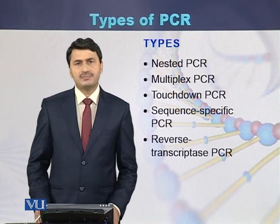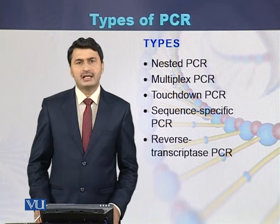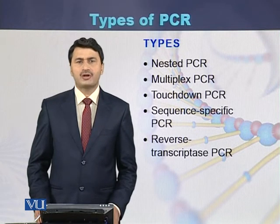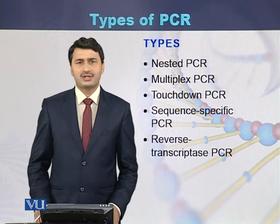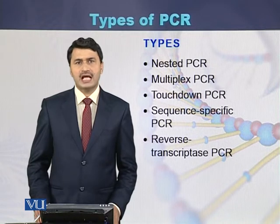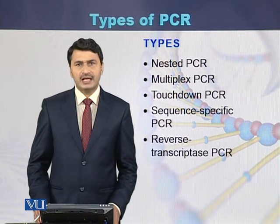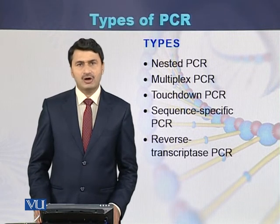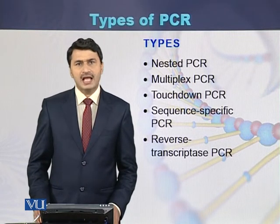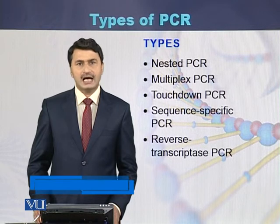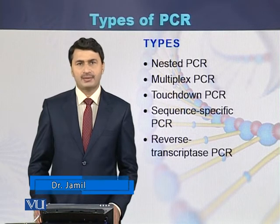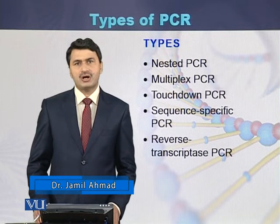Nested PCR is such a PCR in which there are two pairs of primers. The first pair of primers amplifies the larger fragment, while the second pair of primers amplifies the shorter fragment, which is actually within the larger fragment. Such a PCR is called nested PCR.